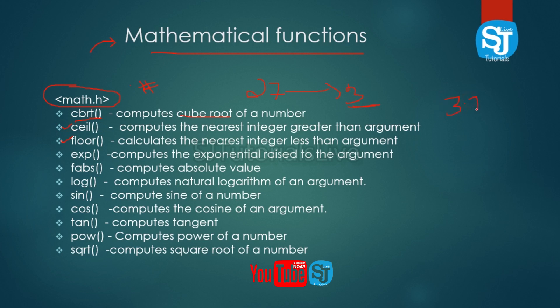For example, the ceiling of 3.7 gives the answer 4. The floor of 3.2 gives the answer 3.